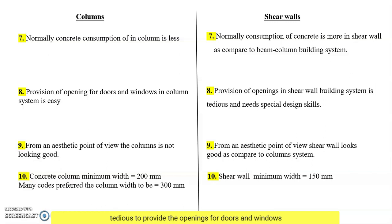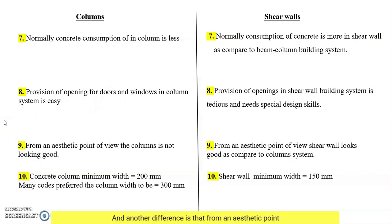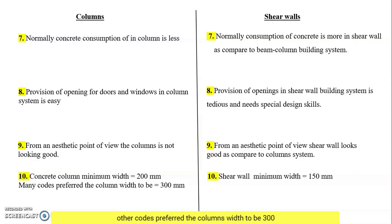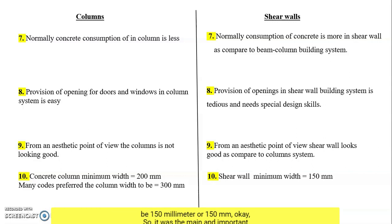From an aesthetic point of view, columns are not as visually appealing, but shear walls look very good compared to a column system. Also, the minimum width for concrete columns is 200 mm, with many codes preferring 300 mm, whereas the minimum width for shear walls is 150 mm.